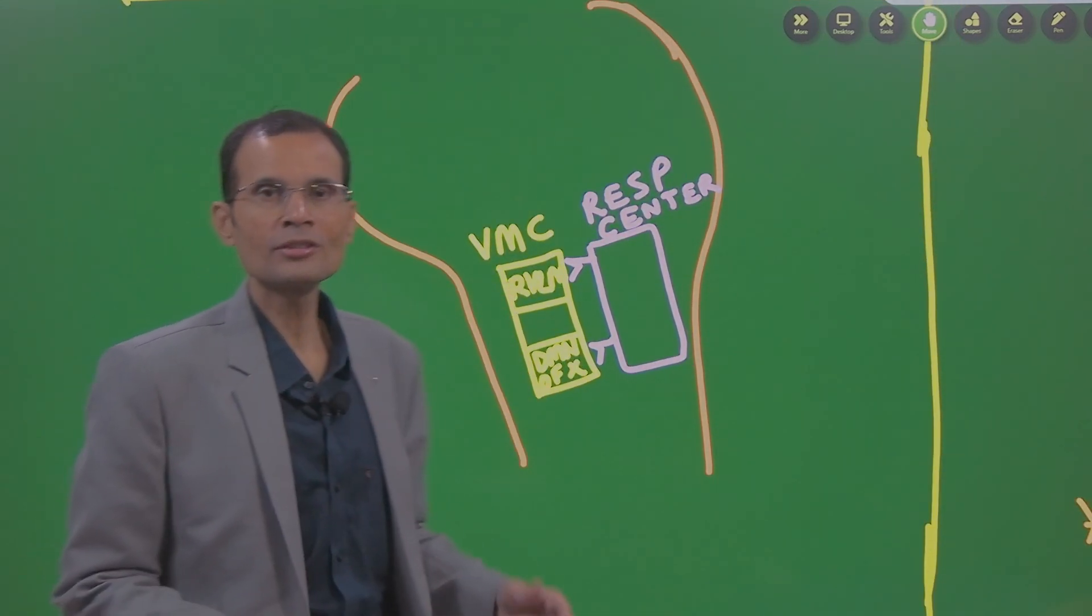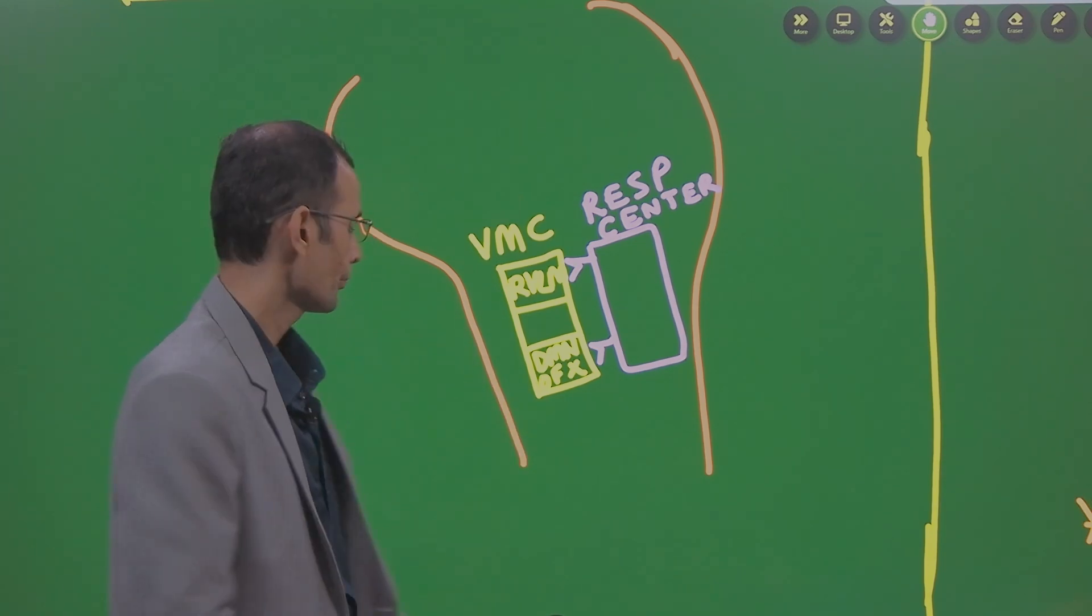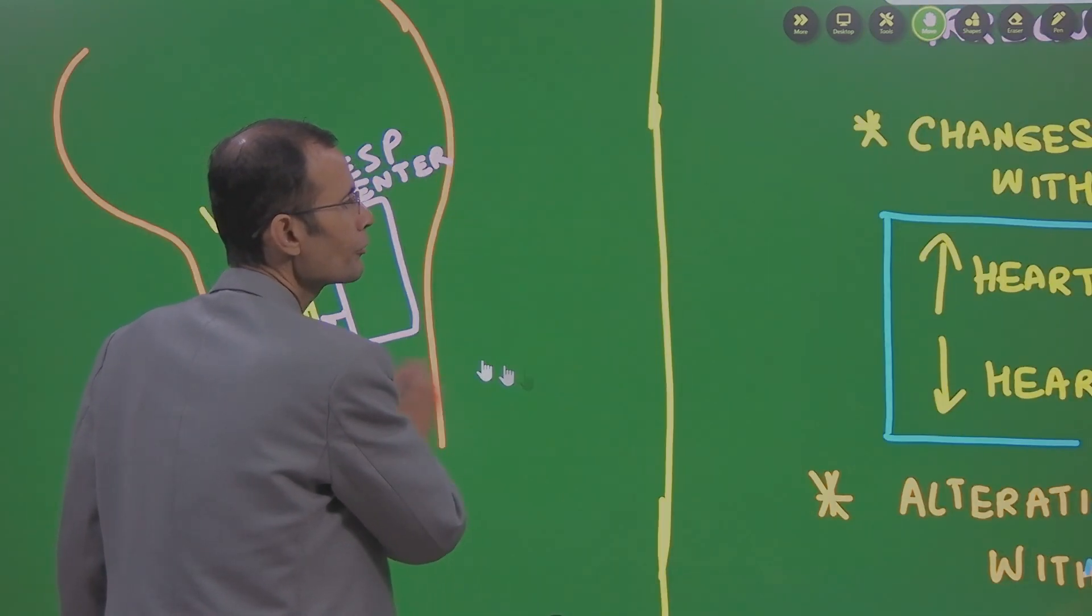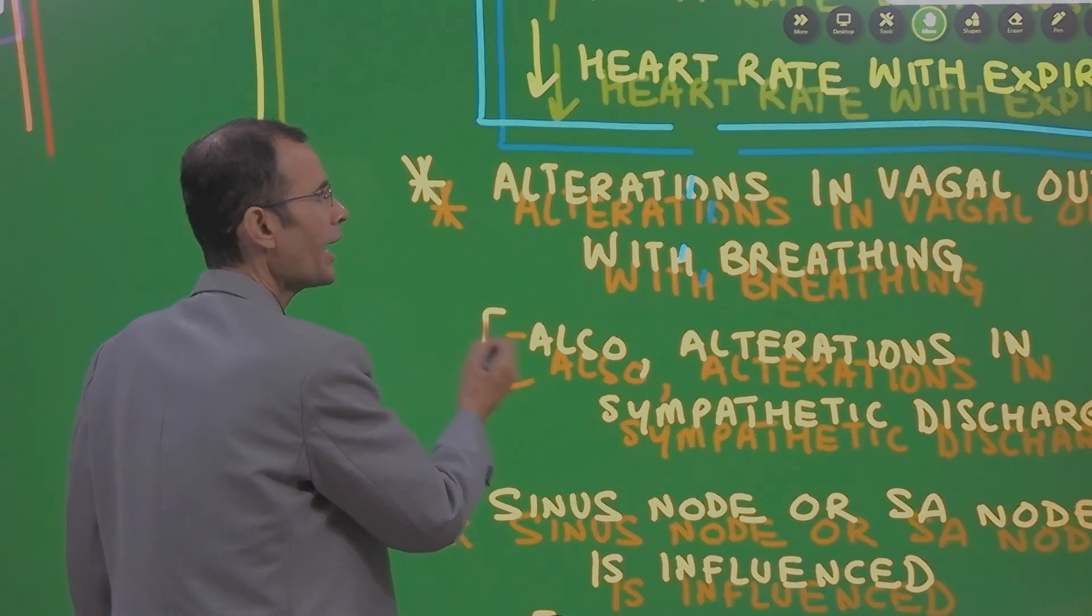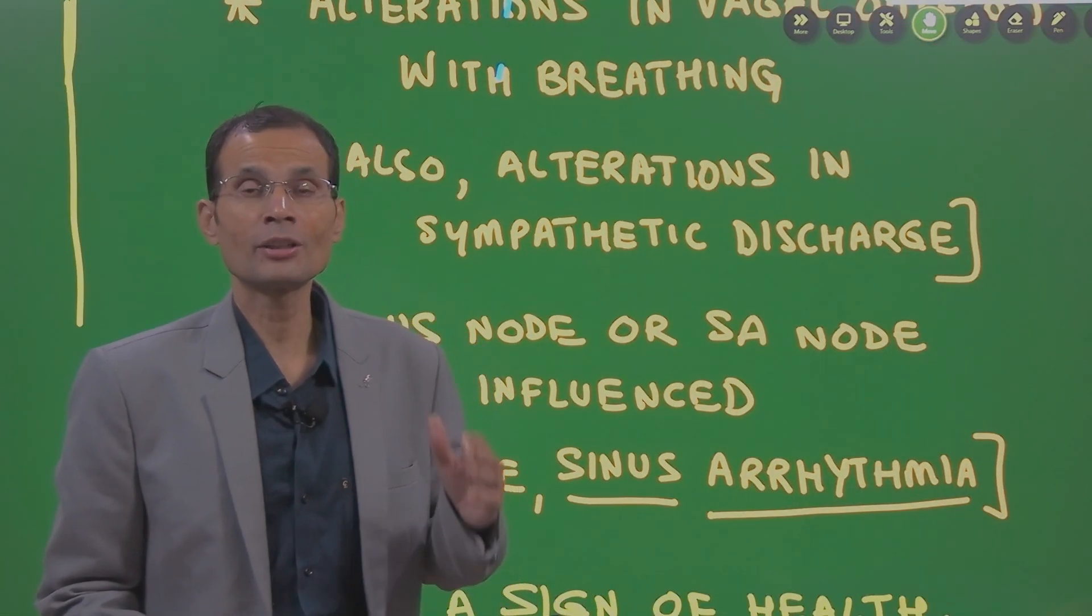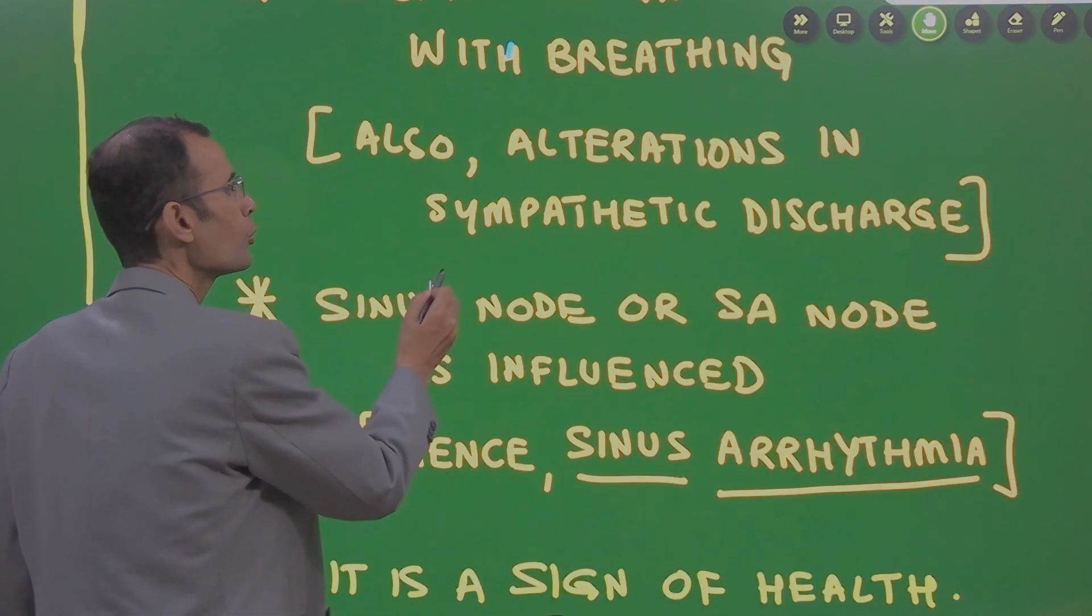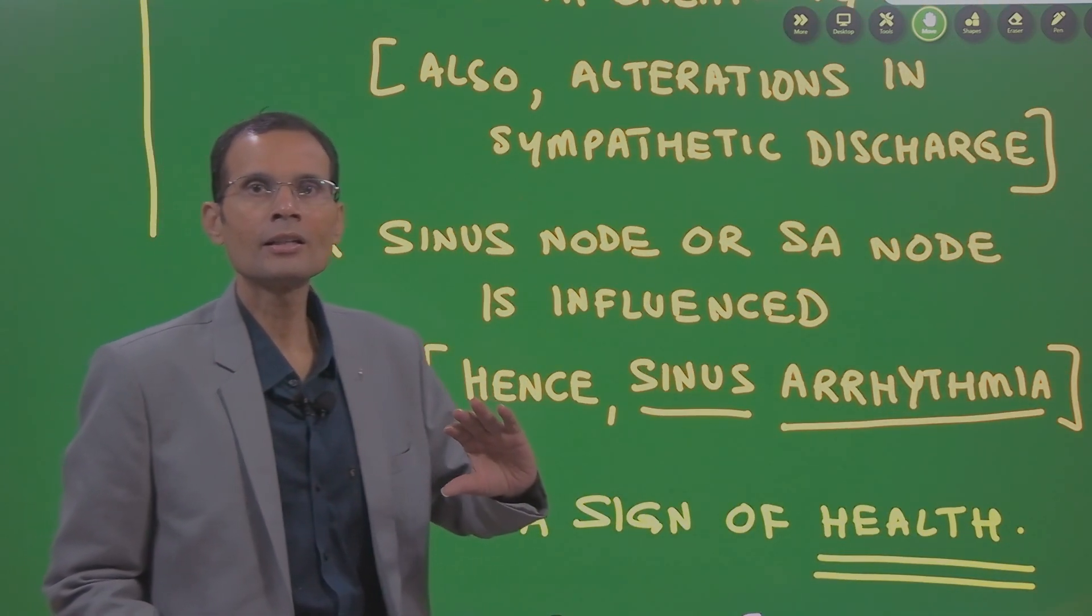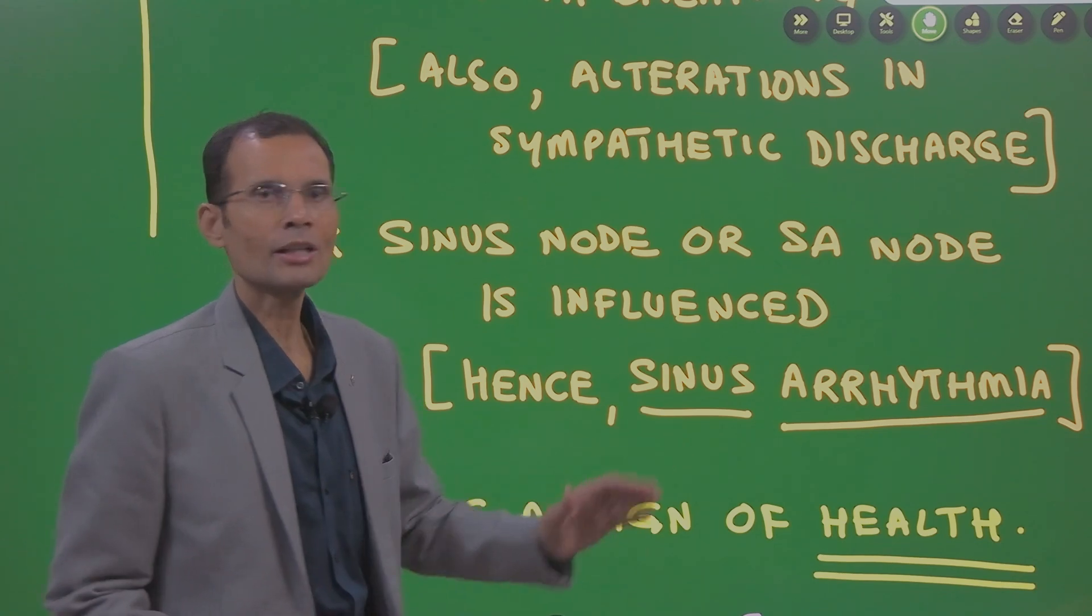And therefore, by influencing the vasomotor center, breathing influences the sympathetic and vagal outflow to the heart, particularly to the SA node. And therefore, it results in the arrhythmia or irregular heartbeat.